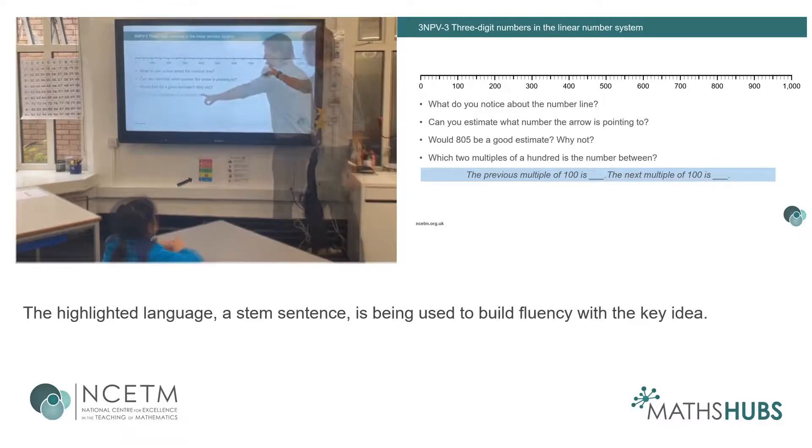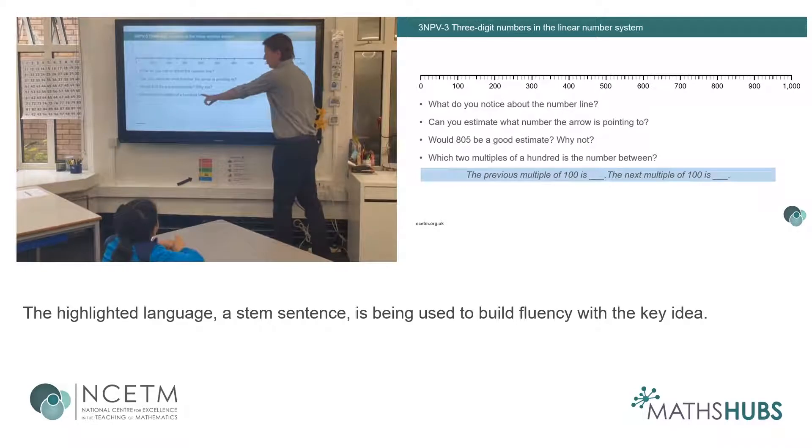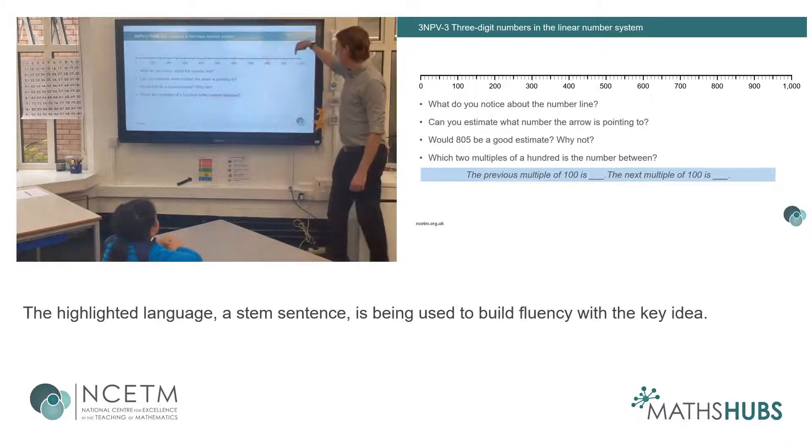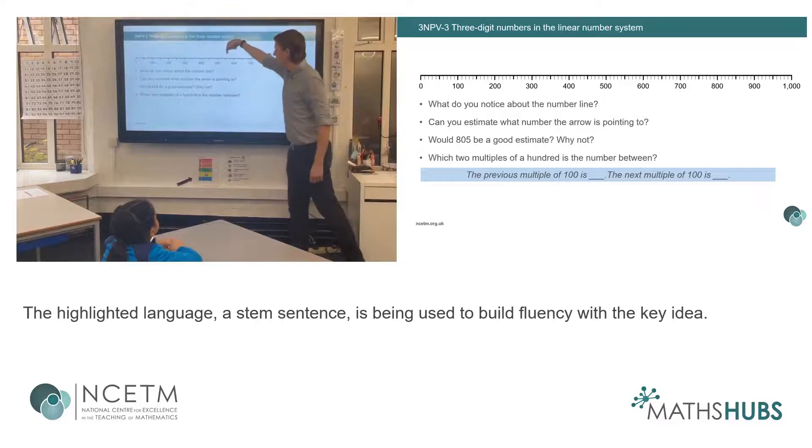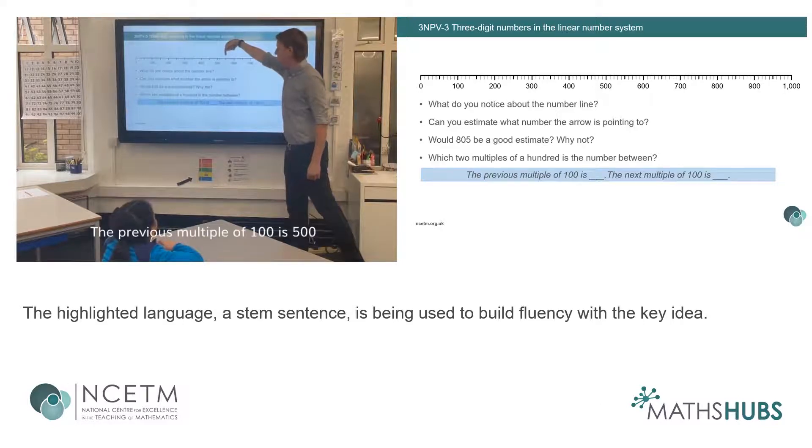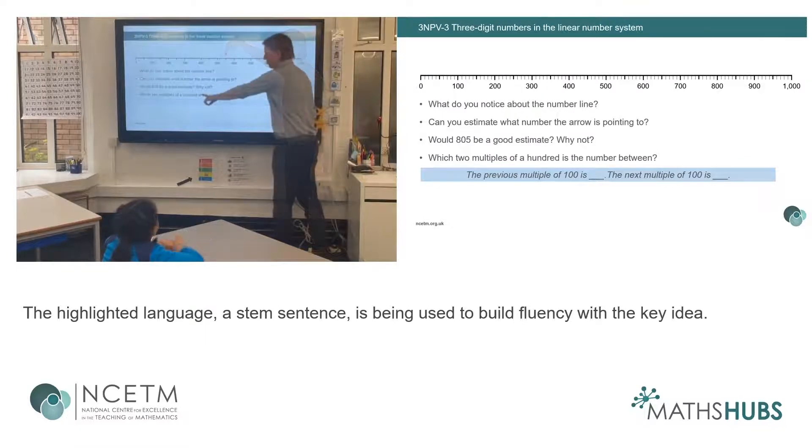Here, a child is encouraged to use the stem sentence to improve their explanation. When you look at it, if the arrow is pointing here, the multiples of 100 either side would be 900 and 1000. If it was here, what multiples of 100 would it be? Can you use this sentence to describe? If my arrow is here, Mikael? The previous multiples of 100 is 500 and 1000.